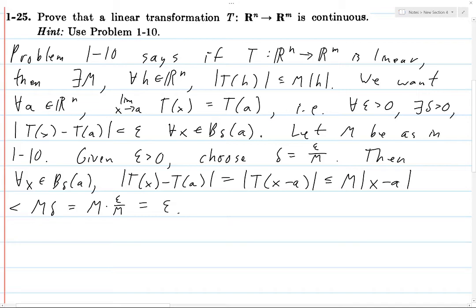So it is in fact the case that given any epsilon, we can choose a delta such that for every single x in a delta ball around A, you get the distance between T(x) and T(A) being less than or equal to epsilon.